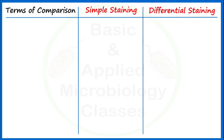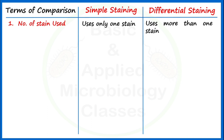The first point of difference is the number of stains used. In case of simple staining, we use only one stain, and in case of differential staining, we use more than one stain. A stain is a kind of chemical or dye — a coloring agent — that improves the visualization of microorganisms by increasing contrast between the background and the object during microscopic examination.